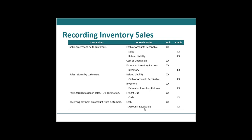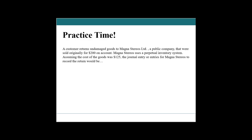Time for some practice. A customer returns damaged goods to Magnet Stereos Limited, a public company, that were sold for $200 on account. Magnet Stereos uses a perpetual inventory system. Assuming the cost of goods sold was $125, what would the journal entry or entries be for Magnet Stereos to record the return?